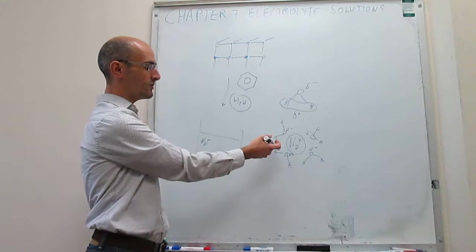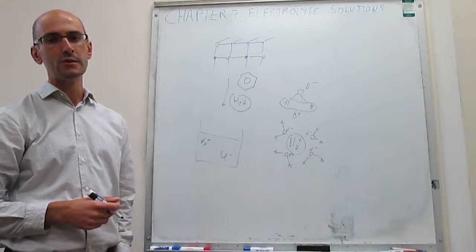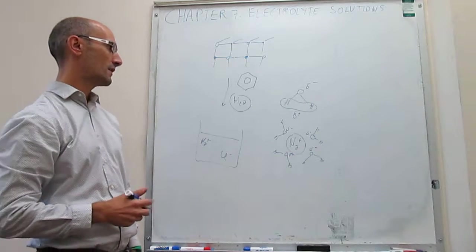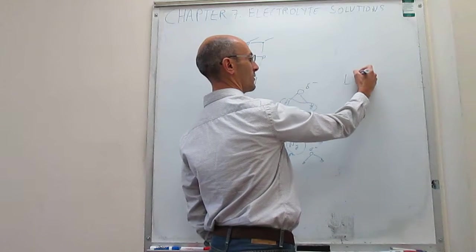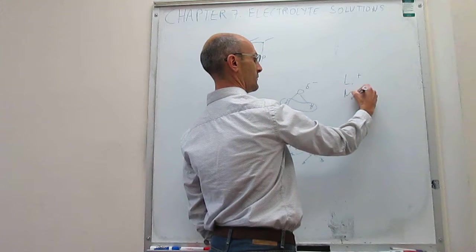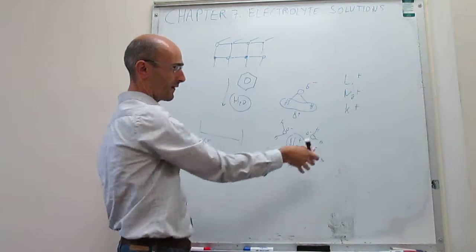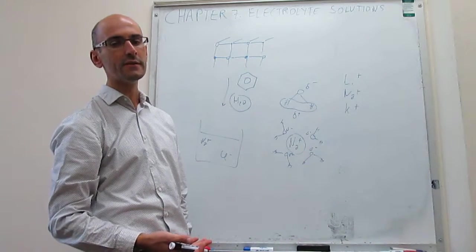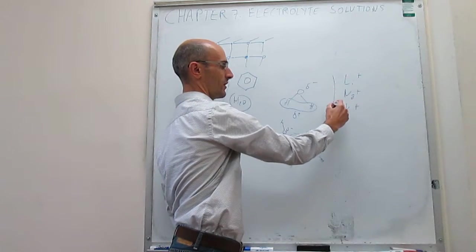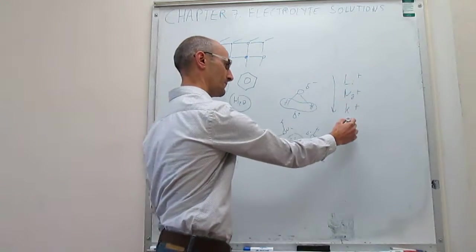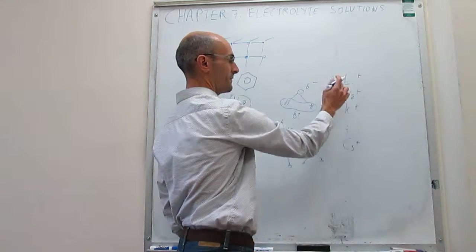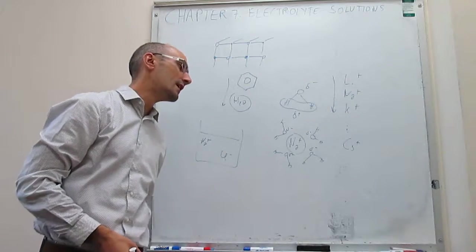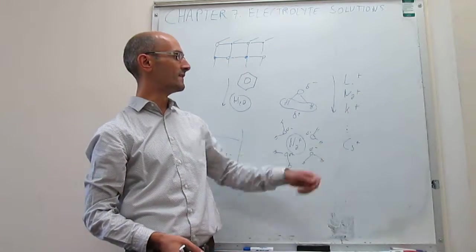Now, a way to actually understand a little more about these interactions here is to actually take a look at the mobility of ions in solution. When we look at the alkali ions, you go through the periodic table and go through the series of alkali ions. Down the periodic table, we know that the size of the ions in the gas phase increases as you go down in the periodic table, such that lithium is the smallest ion, and then caesium plus would be a much larger ion than these ones.